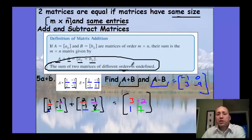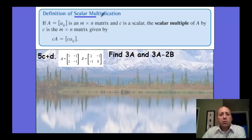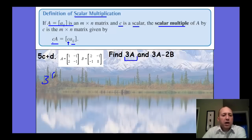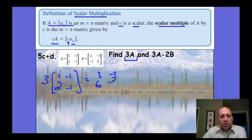Adding and subtracting matrices is pretty simple — you just add or subtract the corresponding positions. For scalar multiplication, given matrix A and scalar C, C times matrix A means you multiply every entry by C. So three times matrix A — which is [1, -1, 2, -1] — you multiply every entry by three.